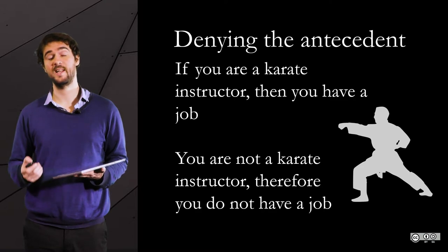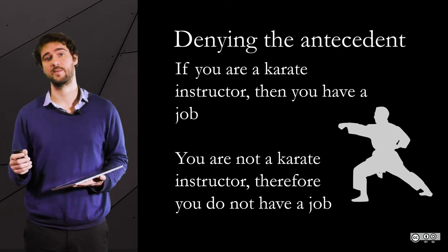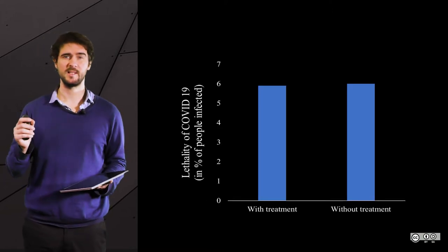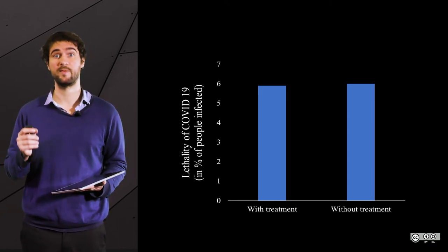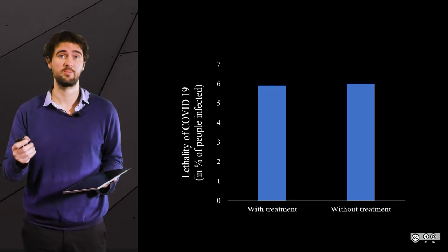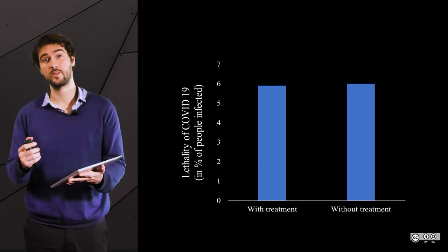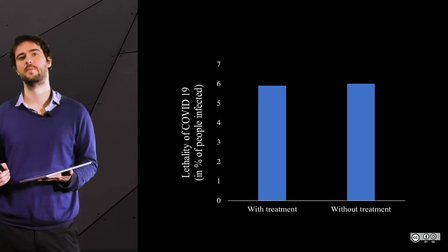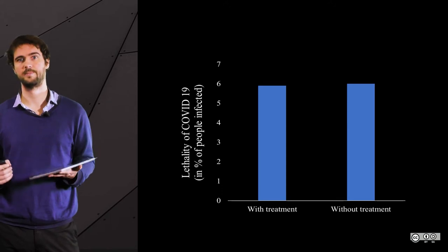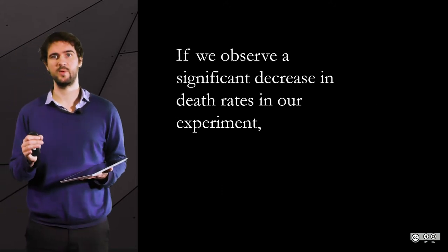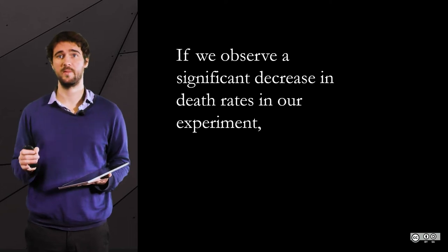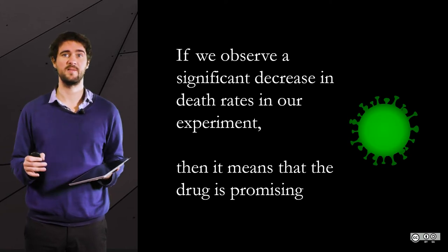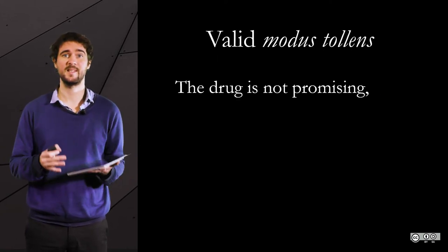This propositional fallacy is pretty common in the field of data analysis. Take a usual example from the coronavirus pandemic: imagine we are looking for a treatment and believe we found a drug that could do the trick, so we organize a clinical trial. A group gets the experimental drug and the control group does not. The correct form of reasoning: if we observe a significant decrease in death rates in our experiment, then it means the drug is promising. The drug was proved to be ineffective, therefore we will not see any significant decrease.